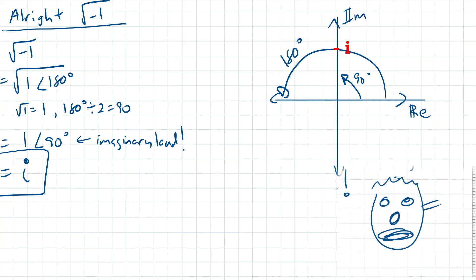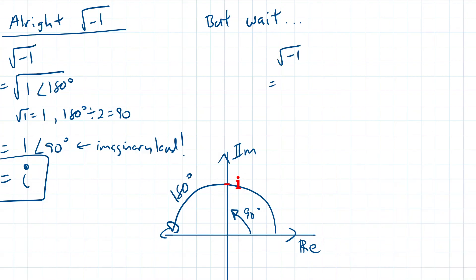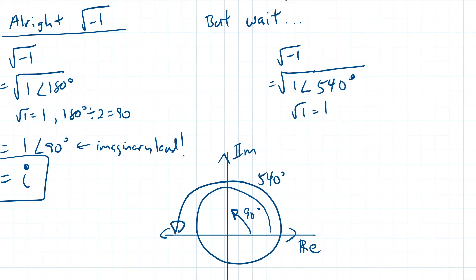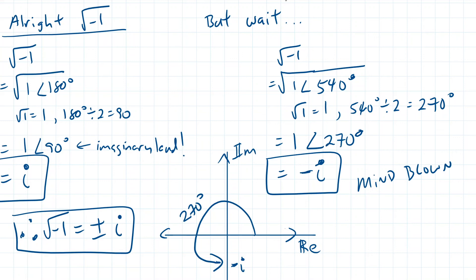Mind blown explosion number 2. But wait again, we're not even done with the fun yet. Remember that 180 degrees can be achieved by rotating yet another 360 degrees around, giving a grand total of 540 degrees. The square root of 1 is still 1, but half of 540 degrees is 270 degrees. Rotating 270 degrees around counterclockwise points us into the negative imaginary dimension. So that's why the square root of negative 1 is equal to i, or negative i. Double mind explosion.